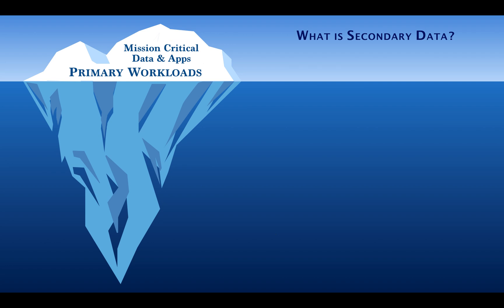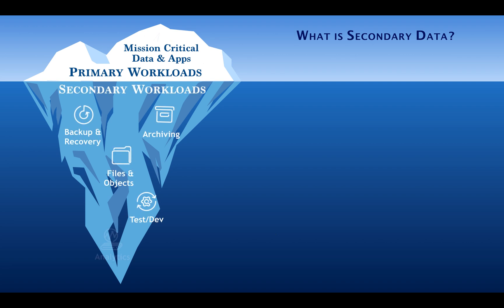To get started, I want to talk about what is secondary data. Using the analogy of an iceberg, that tip of the iceberg that sits above the water — that's what we call your primary workloads: mission critical data and applications, your client-facing data, low latency, always needs to be on. We're seeing quite a bit of innovation around hyper-converged technologies and flash storage. But where Cohesity focuses is on that large piece of the iceberg that sits below the waterline — what we call our secondary workloads.